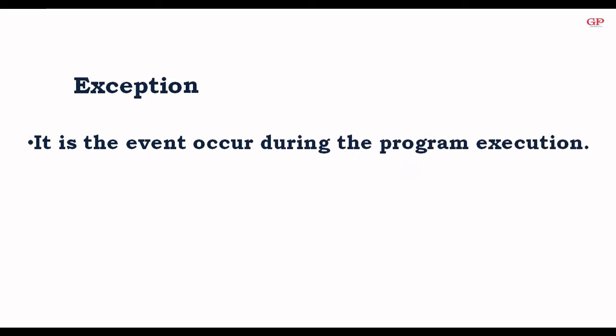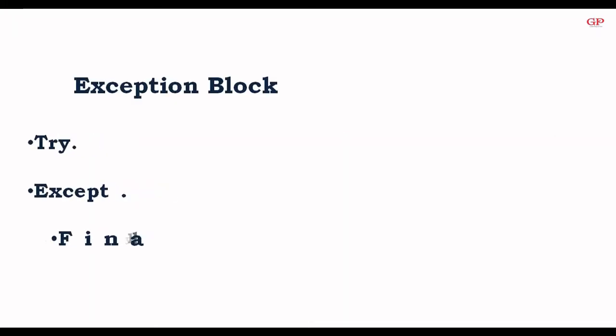Starting with the introduction of exceptions: an exception is an event which occurs during the execution of a program that interrupts the normal flow of program instructions. The exception in Python is an error. When it raises an error, the interpreter stops the current process. There are various blocks to handle exceptions: the try block tests the code for errors, the except block handles the error, and the finally block executes code regardless of the result.